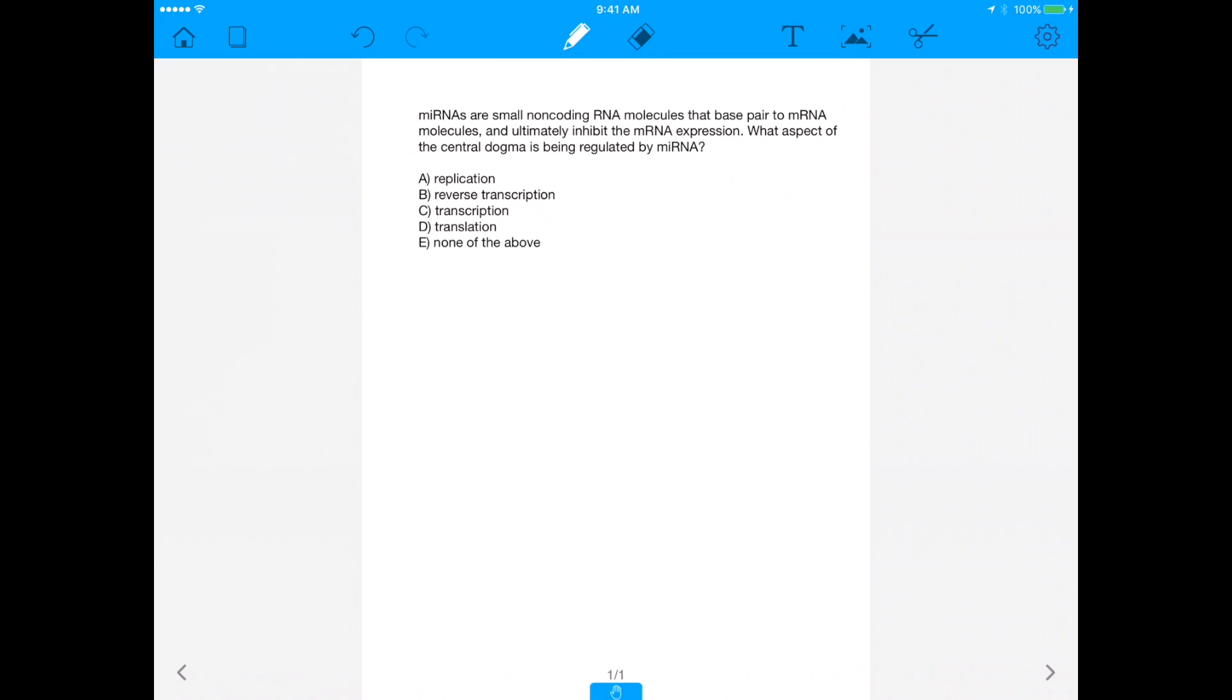All right, let's get straight into today's question. So today's question is about microRNAs, which are abbreviated miRNAs. These are small non-coding RNA molecules that base pair to mRNA molecules and ultimately inhibit the expression of mRNA. What aspect of the central dogma is being regulated by microRNAs?